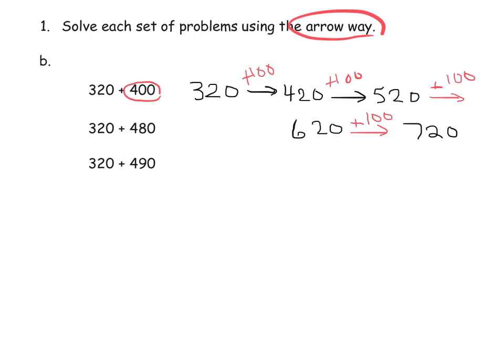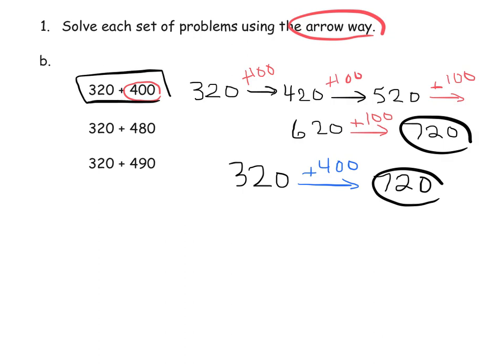Or students might do that whole process in one giant leap. So a couple of ways to use the arrow method on that first problem. Let's do 320 plus 480. So 320, and then I could add 400. That gives me 720. And then I could add 80, and that gives me 800.